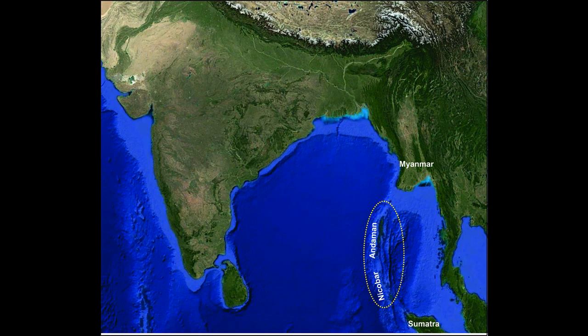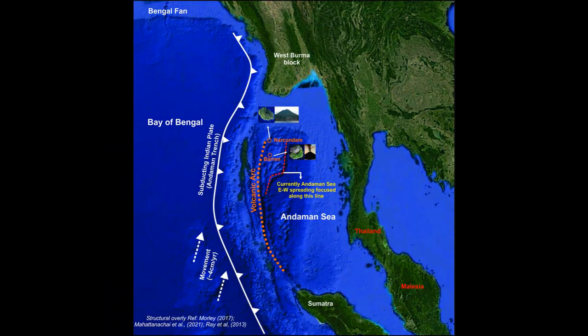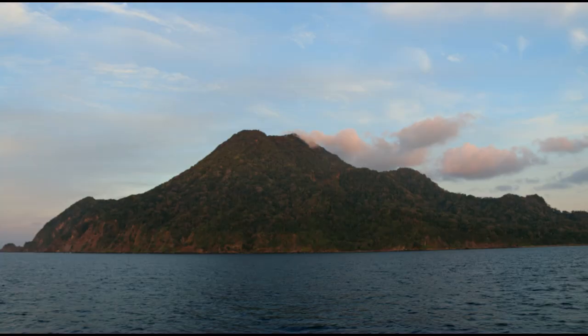The Andaman and Nicobar Islands are located in the southern edge of the Bay of Bengal, forming an arc between the Bay of Bengal in the west and Myanmar and Sumatra in the far east. The arcuate morphology follows the oblique subducting Indian plate, shown by the white line along with the triangle marking the direction of the Indian Oceanic plate subduction. Geophysical studies indicate the plate is moving at around 4 cm per year. The volcanic islands are located between Sumatra in the south and Myanmar in the north, marked by the red dotted line.